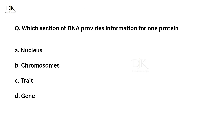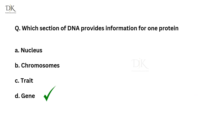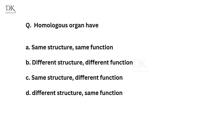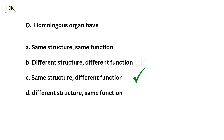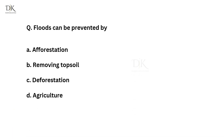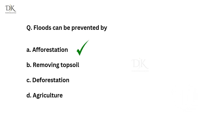Which section of DNA provides information for one protein? The right answer is gene. Homologous organs have the same structure but different function. Floods can be prevented by? The right answer is afforestation.